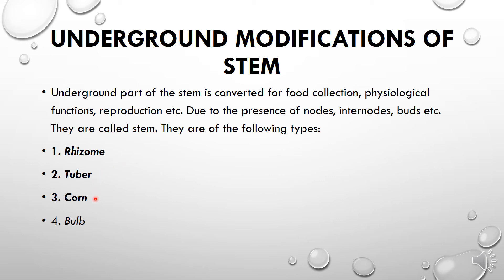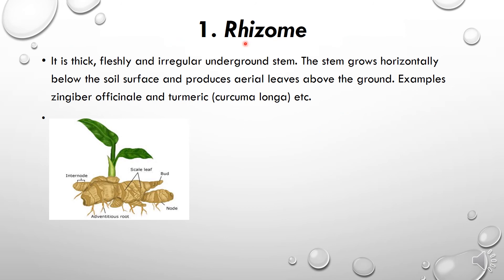Rhizome is a thick, fleshy, irregular underground stem. The stem grows horizontally below the soil surface and produces aerial leaves above the ground. Examples include Zingiber officinale (ginger) and turmeric. Turmeric, known as 'Haldi' in Urdu, is used in daily cooking. Turmeric has this type of underground root called a rhizome, with aerial leaves above the ground.